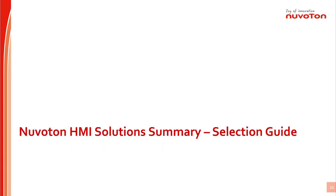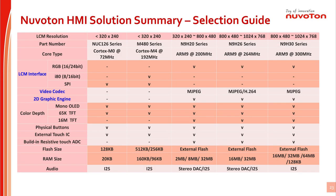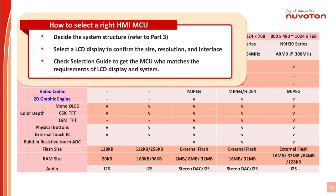Nuvoton HMI solution summary and selection guide: this is a summary table of all Nuvoton HMI solutions. Based on the display resolution and performance demand of the end equipment, engineers could choose a suitable microcontroller to complete the HMI design. The criteria for selecting a suitable HMI microcontroller follow three steps: first, decide the system structure; second, select an LCD or OLED display to confirm the size, resolution, and interface; third, check the selection guide to get the microcontroller that matches the display and system specification requirements.